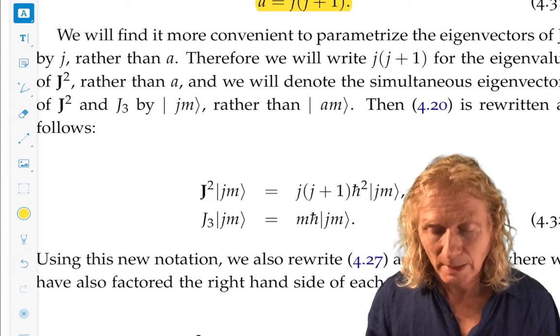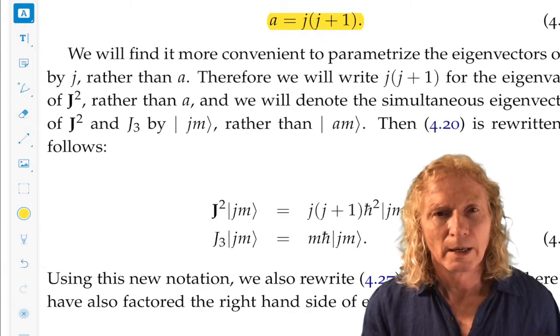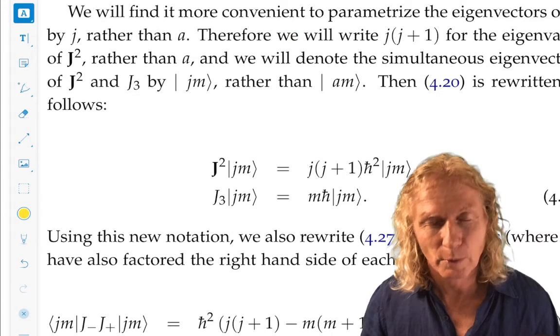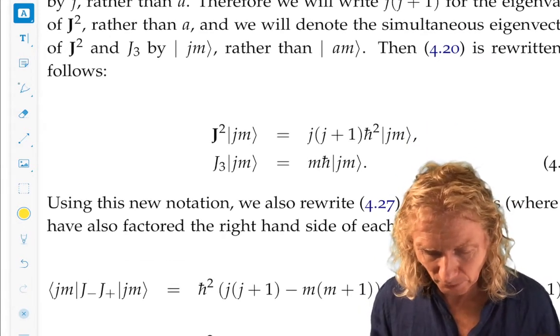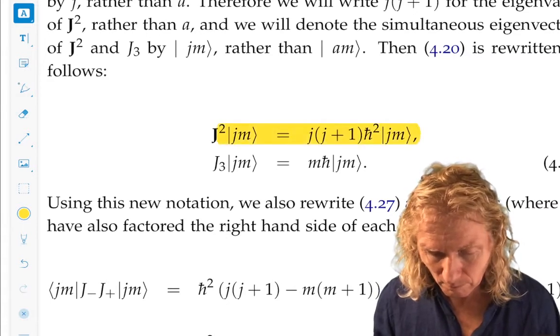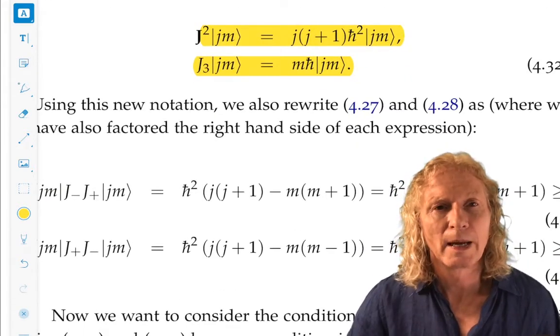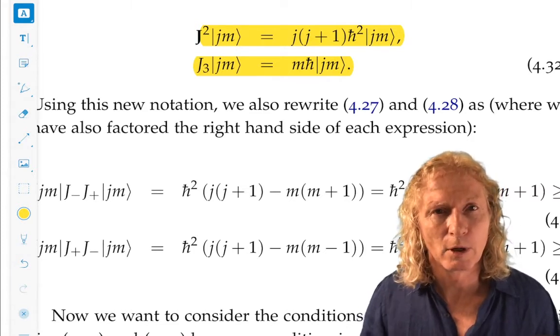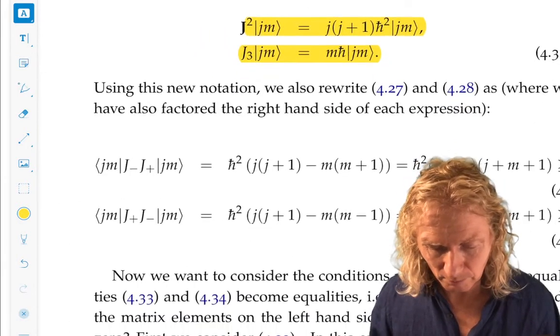So rather than use a to denote our eigenvalue for j squared, we're going to use j times j plus 1. That makes a more direct connection to j squared. So if we adopt this notation, we're finally done with fiddling with notation. j squared, acting on ket jm, is equal to j times j plus 1 h bar squared ket jm. j3, acting on ket jm, is mh bar ket jm. This is our new notation.